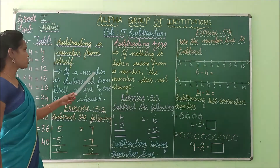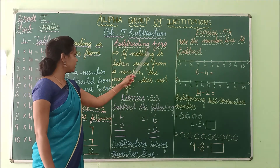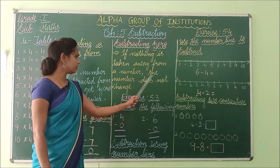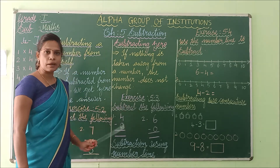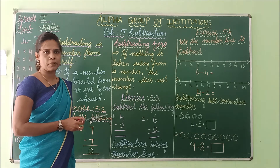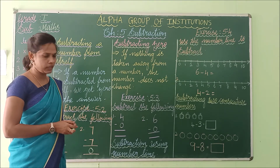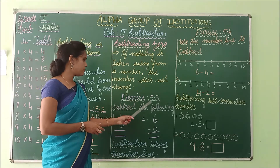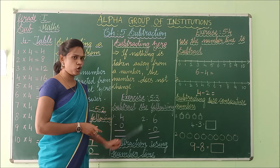Next one — subtracting 0. If nothing is taken away from a number, the number does not change. If you subtract 0 from any number, you will get the same number. See Exercise 5.3 — subtract the following.